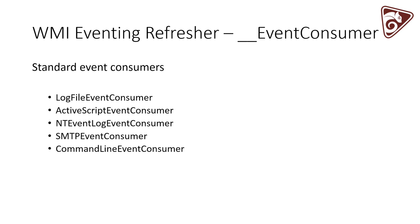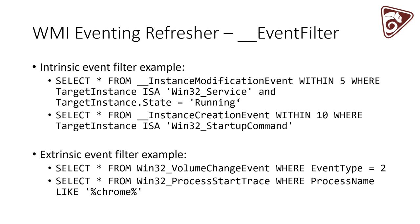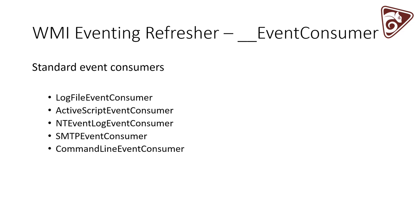There are five built-in event consumers provided by Microsoft. First is the log file event consumer — upon an event filter triggering, write some data to a file. You can pass arguments provided from the event filter to the event consumer, so you can have contextual data like process name and process ID written to the log. The ActiveScript event consumer allows you to execute any WSH scripting language, including VBScript and JScript — but not PowerShell.